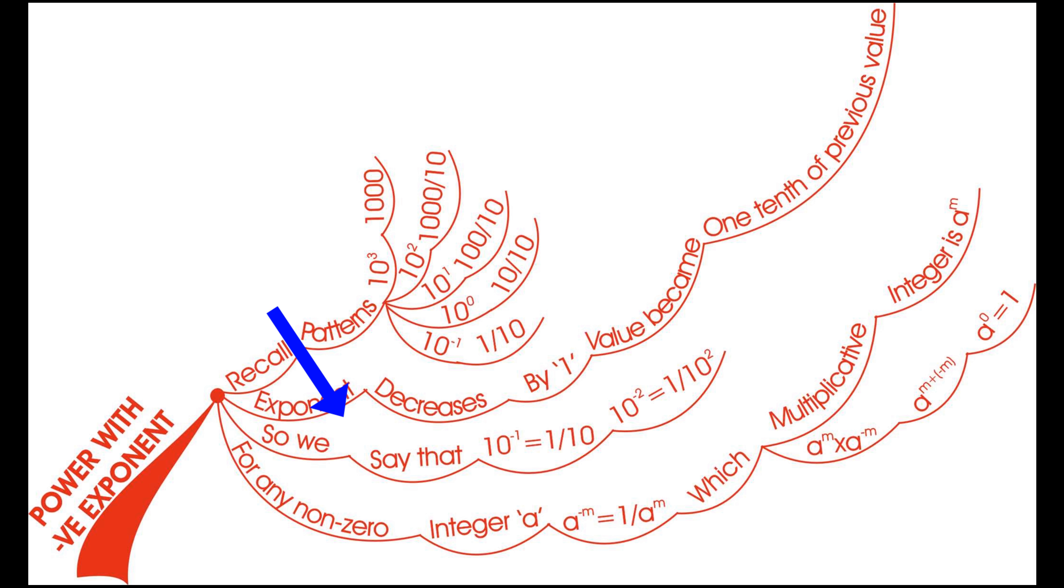So, we say that 10 to the power of minus 1 is equals to 1 by 10. 10 to the power of minus 2 is equals to 1 by 10 square.